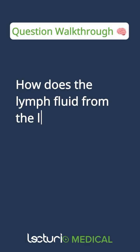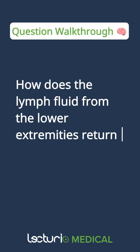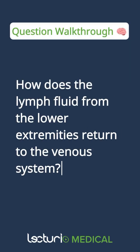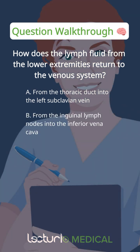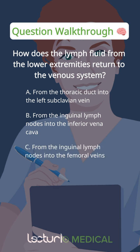How does the lymph fluid from the lower extremities return to the venous system? From the thoracic duct into the left subclavian vein. From the inguinal lymph nodes into the inferior vena cava. From the inguinal lymph nodes into the femoral veins. From the thoracic duct into both internal jugular veins.